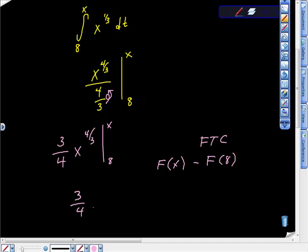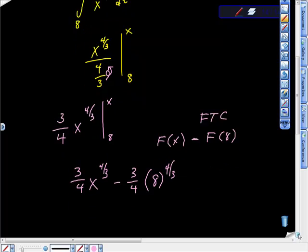It would be 3/4 x, because I'm evaluating at x, to the four-thirds, minus this. Minus 3/4 of 8, so 8 to the four-thirds, right? And this is me evaluating here.